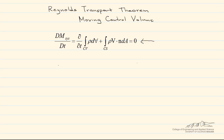A moving control volume is analyzed like a fixed one. However, we have to take into account that we can't use the velocity of the fluid entering and exiting the control volume through the control surfaces in our Reynolds transport theorem. Instead, we have to use a relative velocity that we'll call w, and the relative velocity is the fluid velocity seen by an observer moving with the control volume.